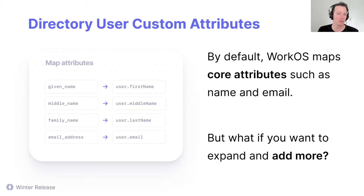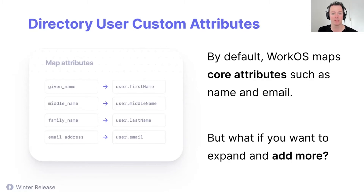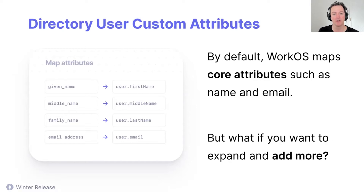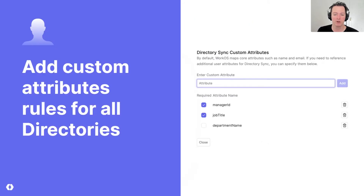So even if you have two or three companies all using Workday, they might choose to represent the department name differently across all of them. We've built a really flexible mapping system that allows you to define custom attributes that you can sync into your application and take action based on that — returned in things like webhooks and the directory systems. This is a little complicated to describe, so we're just going to jump right in and show some screenshots and do a quick demo.